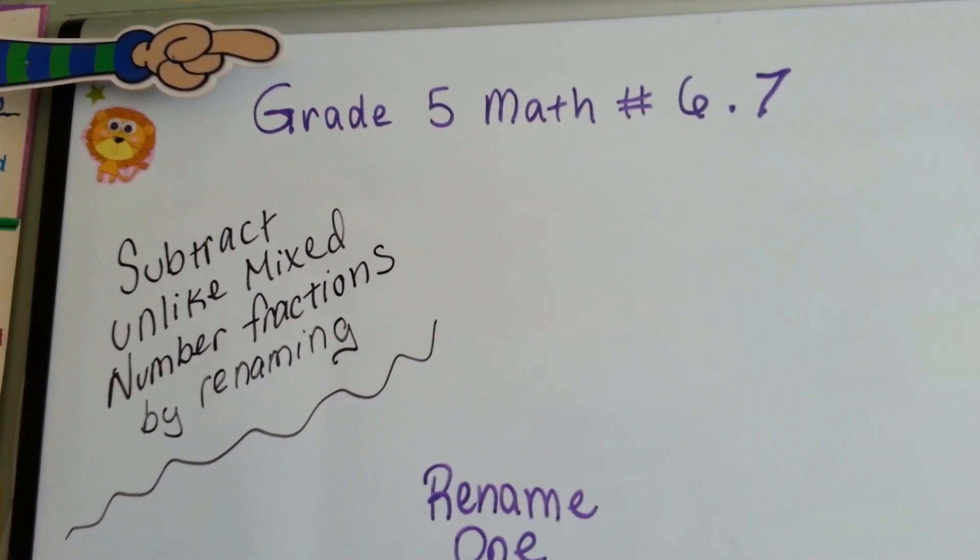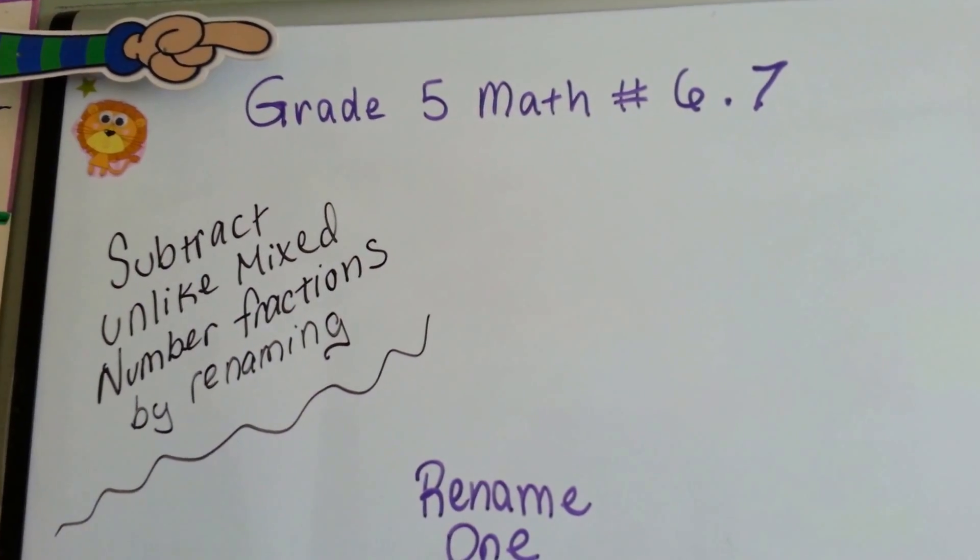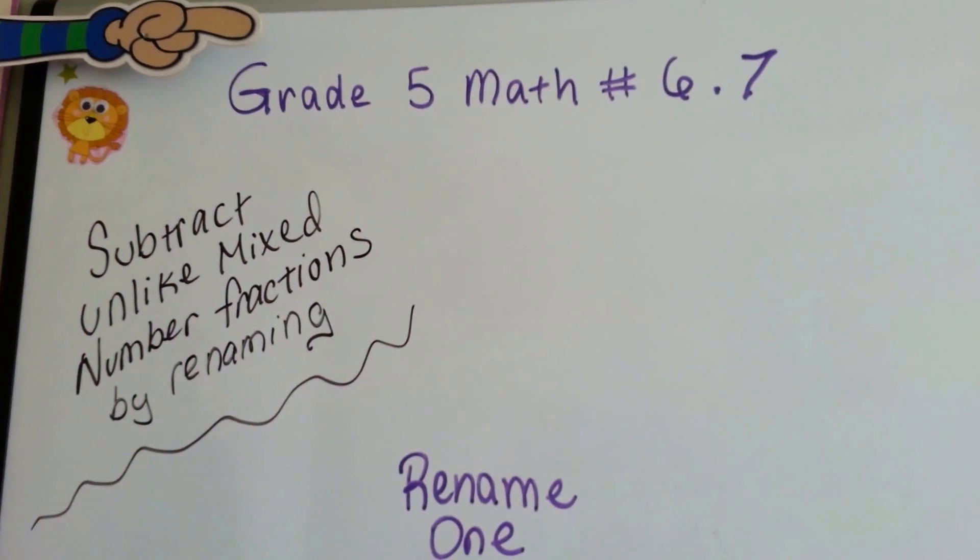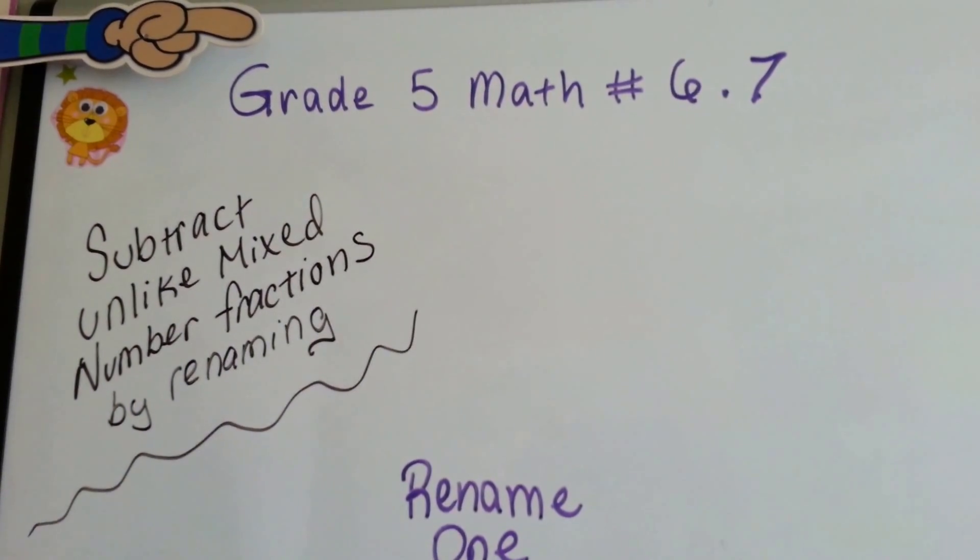Grade 5 math, number 6.7. Subtract unlike mixed number fractions by renaming.